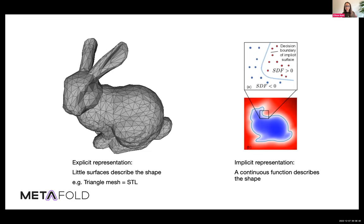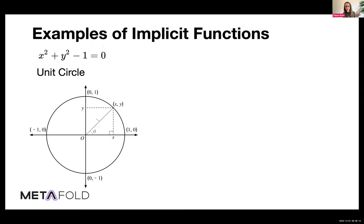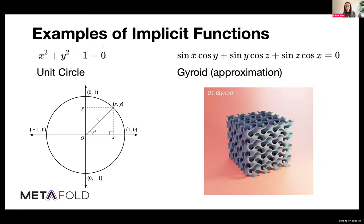In contrast, an implicit representation is a continuous function that describes the shape. Typically this is a signed distance field where everywhere inside the shape the signed distance field is negative, and outside the shape it is positive. The central idea is that the surface of the shape is the set of points where the function is zero. I'm willing to bet that most of you took calculus, so you will know what this is — an implicit function defines the unit circle. We can do this for 3D shapes as well.